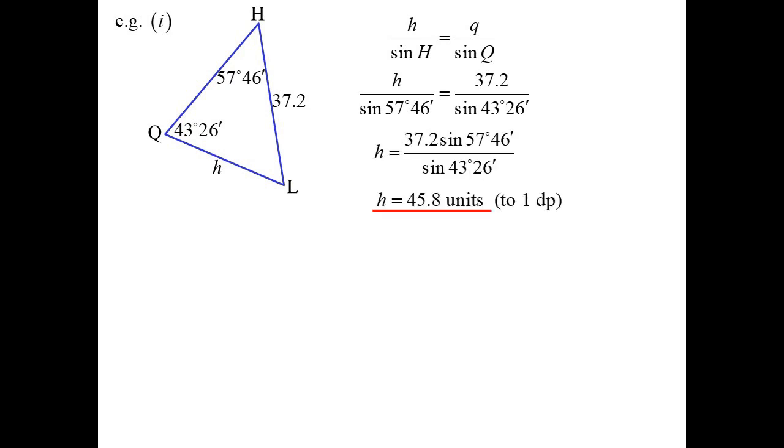So if we want to find a side, h is what I find, so it's h over sine h, and we need to find another pairing where we have a side where we know the opposite angle, and we've got that one there: q over sine q. Substitute in, play around with it, a bit of calculator work, and we end up with our answer. I did mine to one decimal place because in the question it was to one decimal place, so if they don't tell me I tend to match what the question has done.